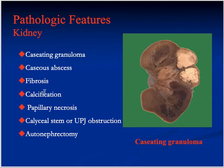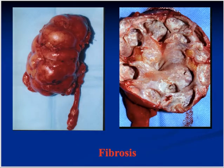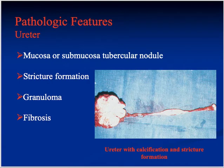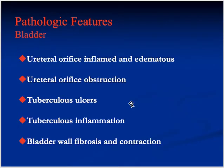Pathological features include caseous abscess, fibrosis, calcification, papillary necrosis, and obstruction at the pelvi-ureteric junction. The ureters also develop nodules and stricture formation, with granuloma and fibrosis. Even the bladder can be involved — the ureteral orifice becomes inflamed and edematous, can get obstructed, tuberculosis ulcers and inflammation develop, and the bladder wall becomes fibrosed with contraction.